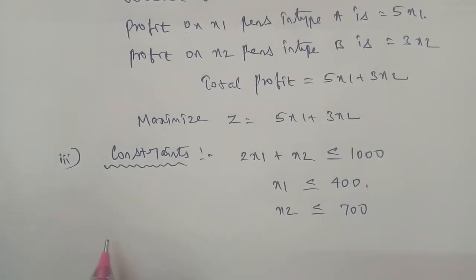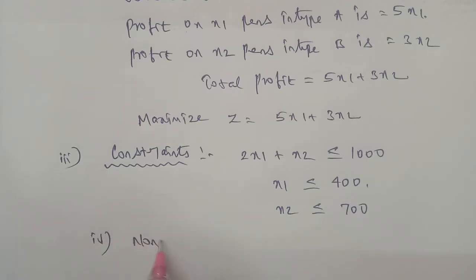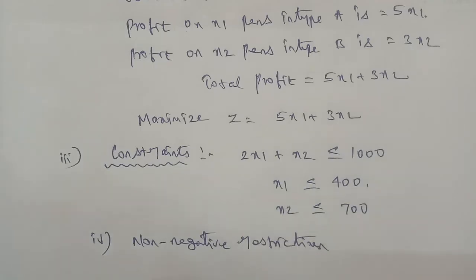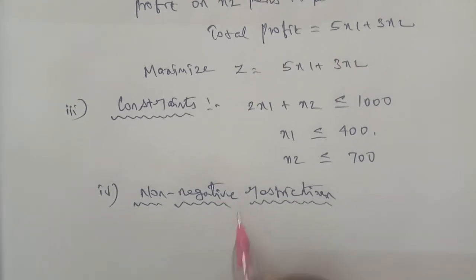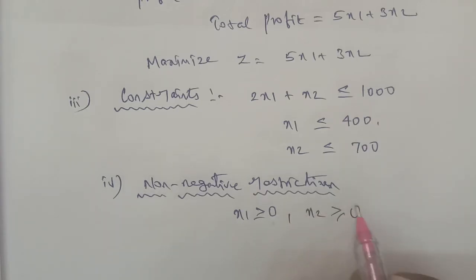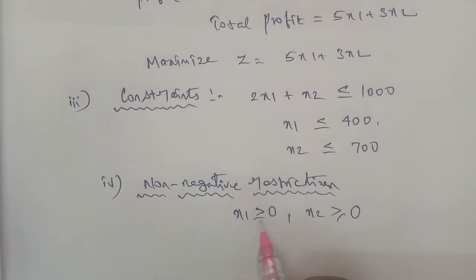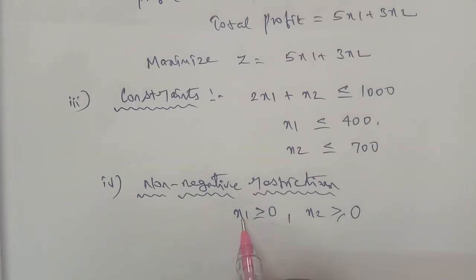At point 4, non-negative restriction. The number of pens cannot be negative. Since we cannot produce a negative number of pens, x1 is greater than or equal to 0 and x2 is greater than or equal to 0.